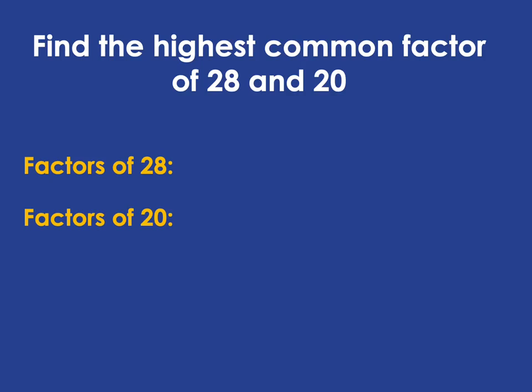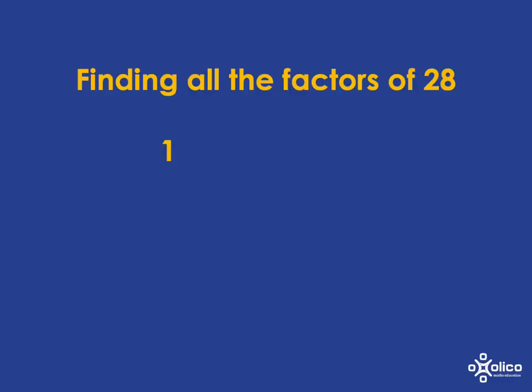In order to do that, we need to find the factors of 28 and the factors of 20, and then we're going to look for which ones they have in common. So let's start by looking for the factors of 28. 1 is a factor and its pair and partner is 28. Then we've got 2 — it's a factor and its partner is 14. We've got 3, that isn't a factor. So we've got 4, it is a factor and its partner is 7.